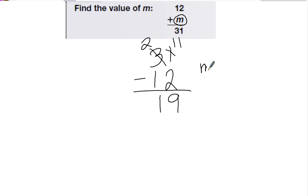So m should equal 19. Now I can always double check by doing 12 plus 19 and see if the answer is 31. So 2 plus 9 is 11, carry the 1. 1 plus 1 plus 1 is 3. So my answer is correct.